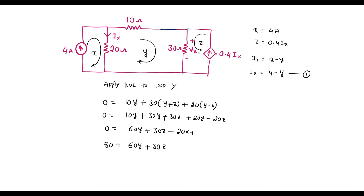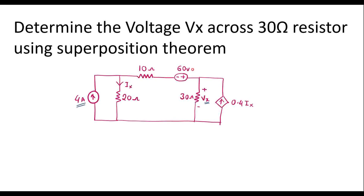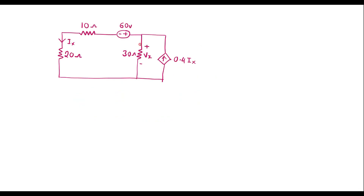So Vx1 is the voltage across the 30 ohm resistor considering the 4 amp source alone. Now similarly, I will consider the 60 volt source alone and open the 4 amp source. Let me draw the circuit. I will assume current through one loop is x and current through the other loop is y. Here, y is nothing but 0.4 ix, and since ix equals minus x, we can write y equals minus 0.4x.